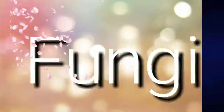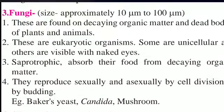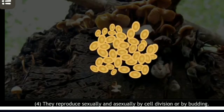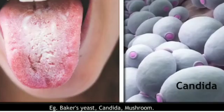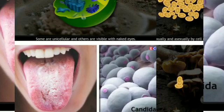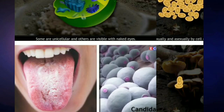Let us move towards fungi as microbes. These are found on decaying organic matter and dead bodies of plants and animals. These are eukaryotic organisms. Some are unicellular and others are visible with the naked eye. Saprophytes absorb their food from decaying organic matter. They reproduce sexually and asexually by cell division or by budding. Example: Candida, mushroom.